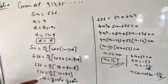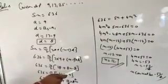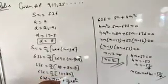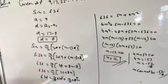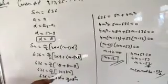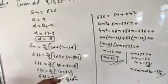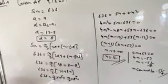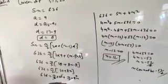636 equal to N upon 2, 18 plus minus 8 then 10 plus 8N. 636 equal to N upon 2 into 10 plus N upon 2 into 8N. 2 divided by 10 is 5, 2 divided by 8 is 4.